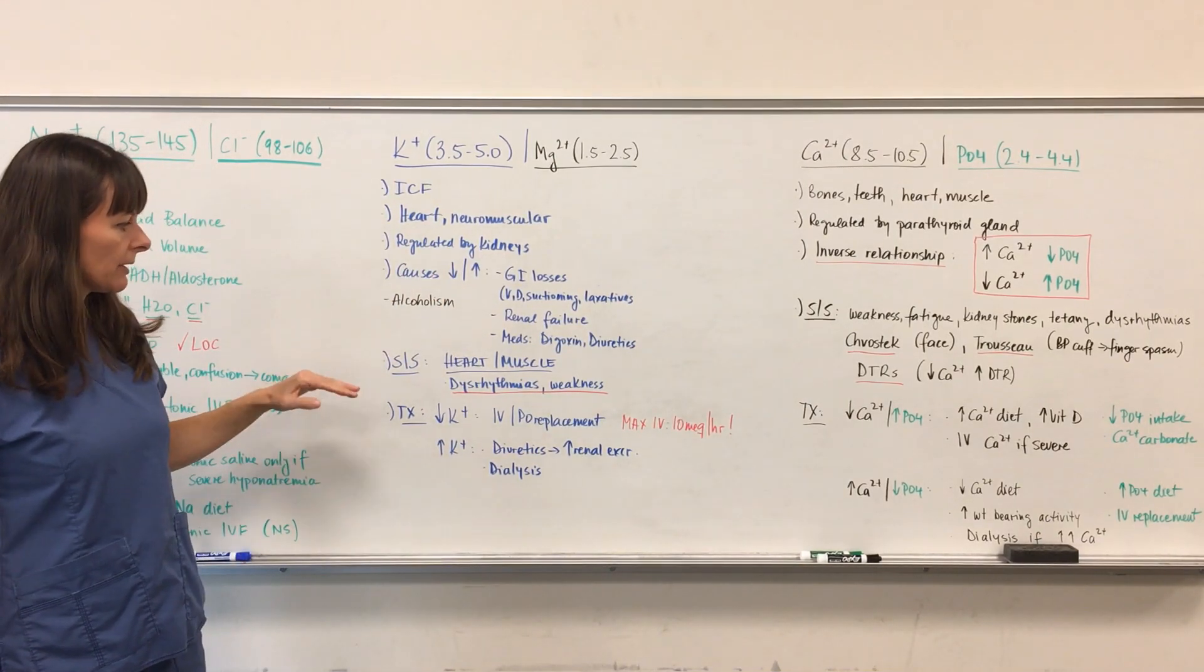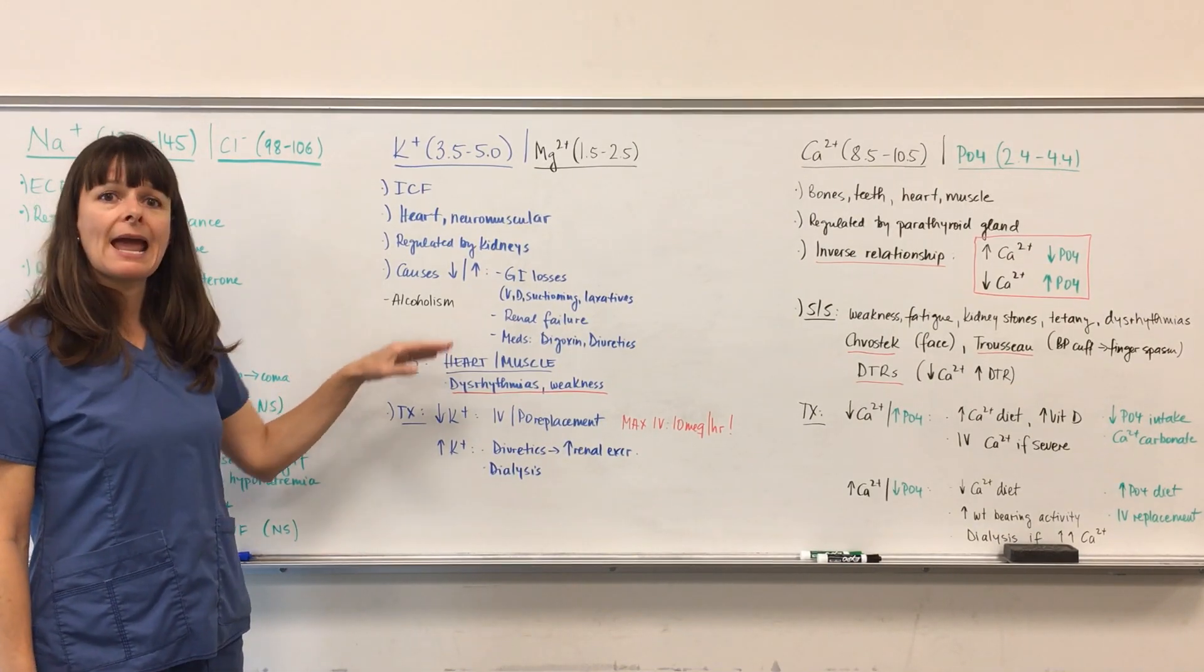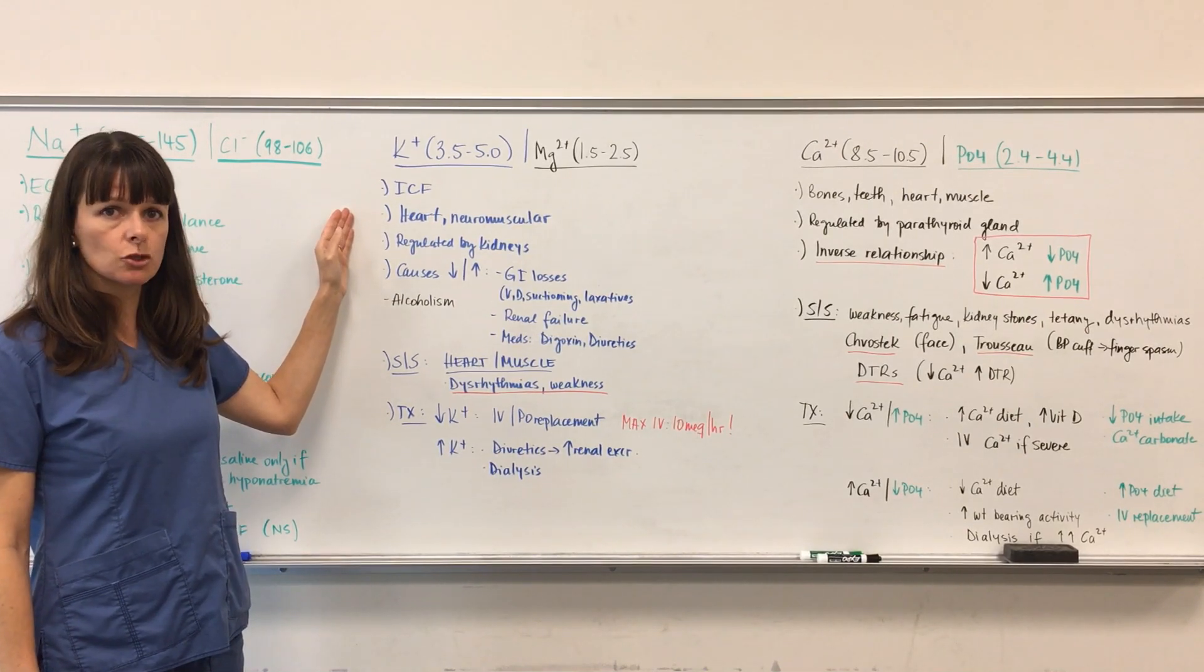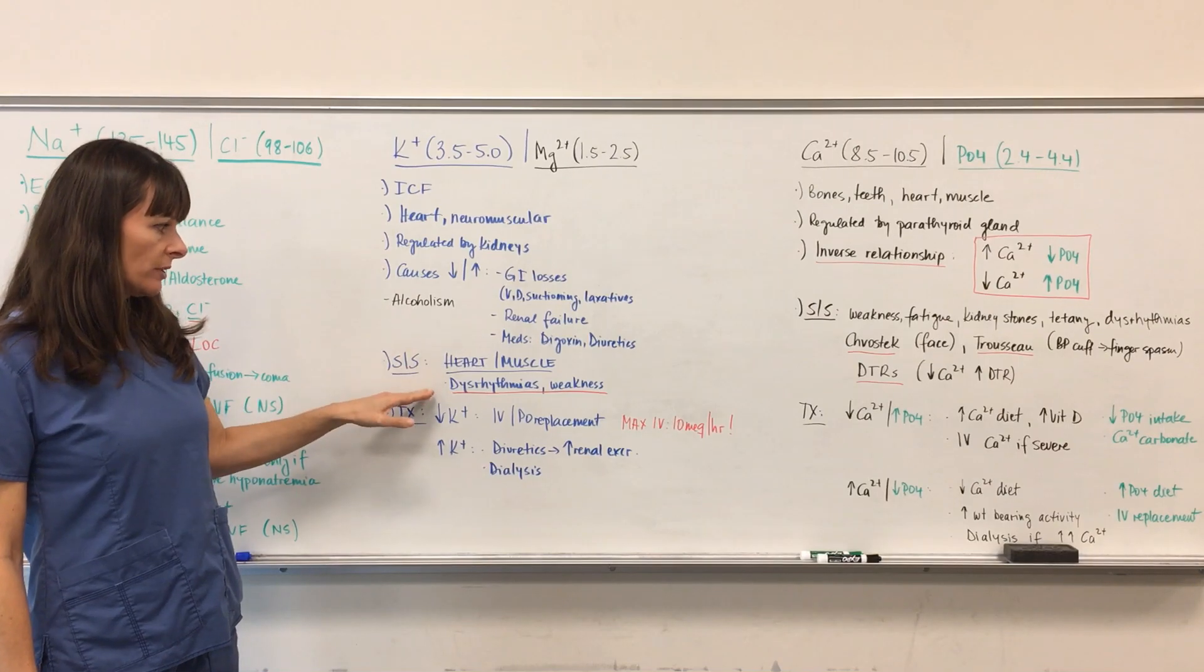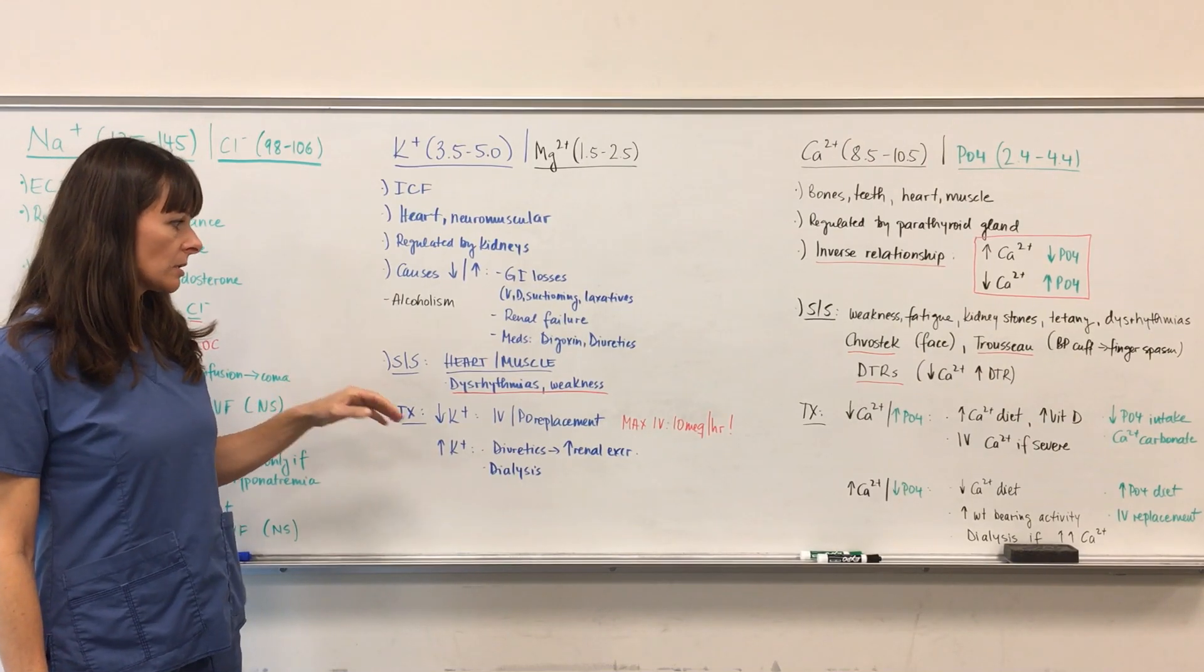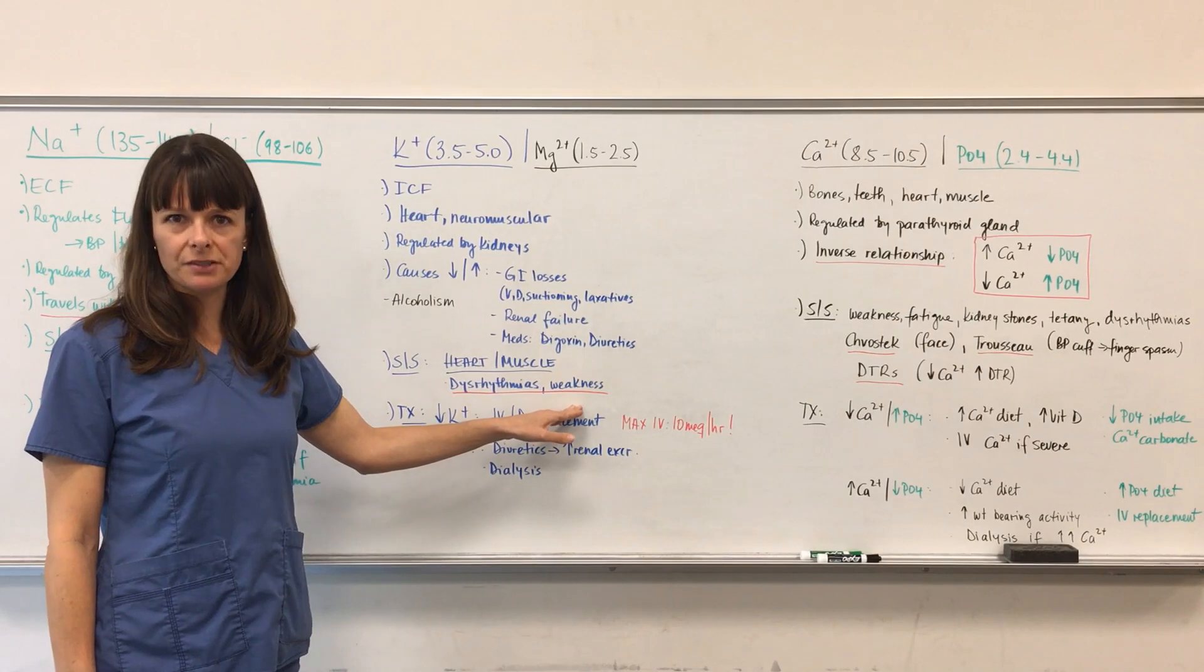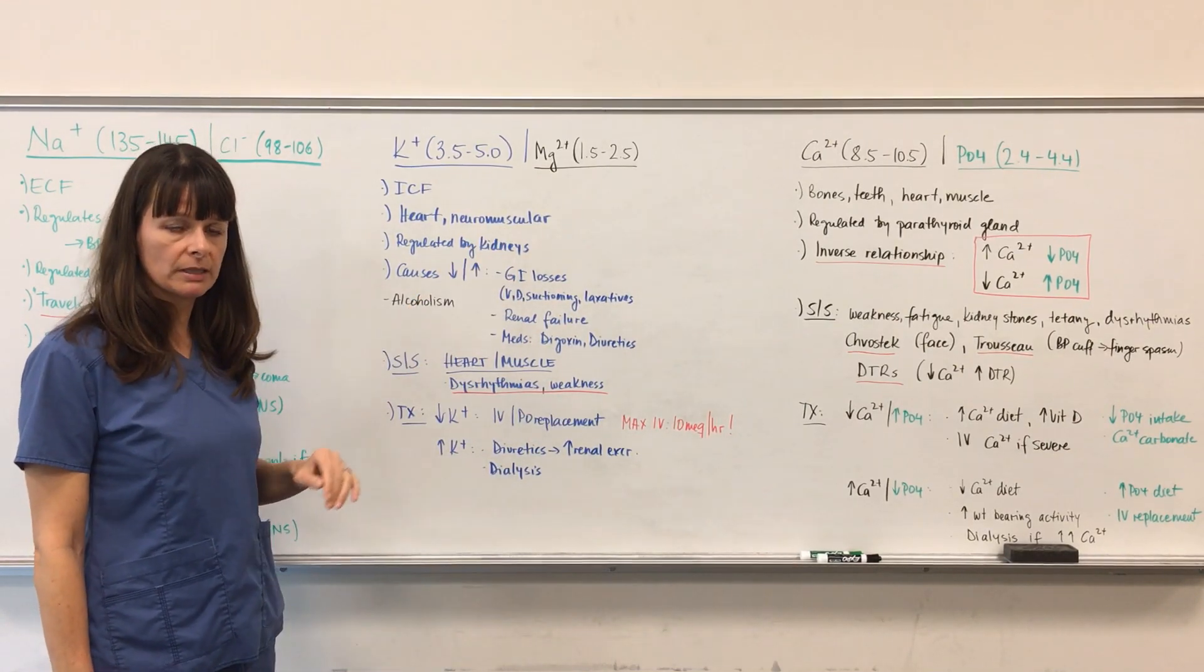Whenever you think about signs and symptoms of potassium imbalance, think about heart and muscle because that's what these two electrolytes are mostly in charge of. Arrhythmias can be caused by abnormalities in potassium and magnesium, as well as weakness, which pertains to mostly skeletal muscle weakness because we need it for neuromuscular contraction.